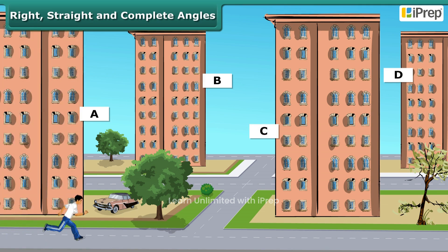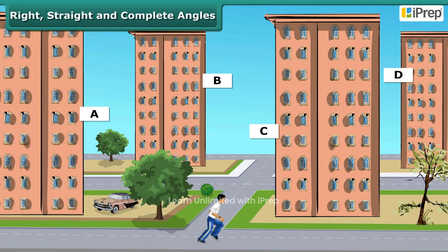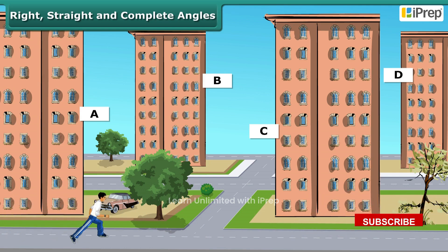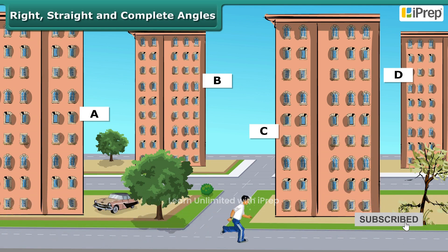Rajiv lives in pocket A and is a fitness freak. Every day in the morning he jogs in and around the residential complex. Let us see the two different routes he takes.